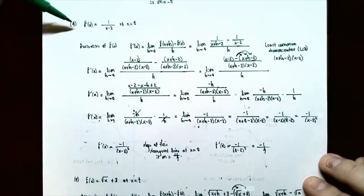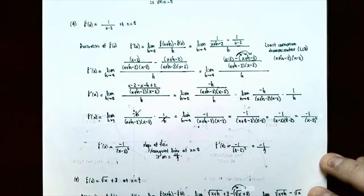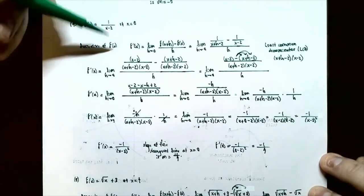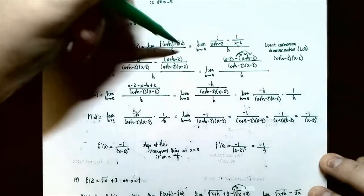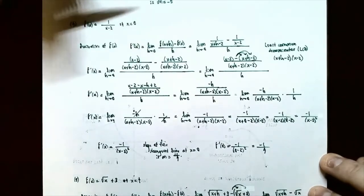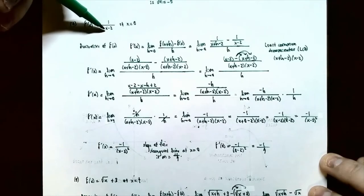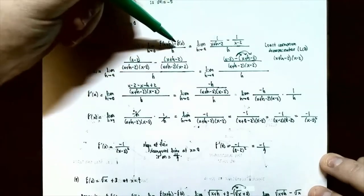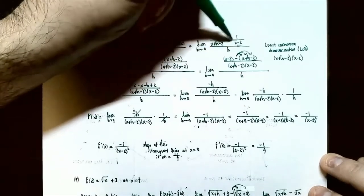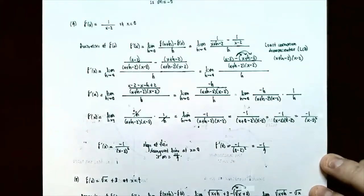Number 4: this time the function is a rational function. F of x equals 1 divided by x minus 2, and find the slope of the tangent line at x equals 0. This will get more complicated with the algebra. We want f prime of x, which is the limit as h goes to 0 of f of x plus h minus f of x all over h. Substituting, f of x plus h is 1 divided by x plus h minus 2.